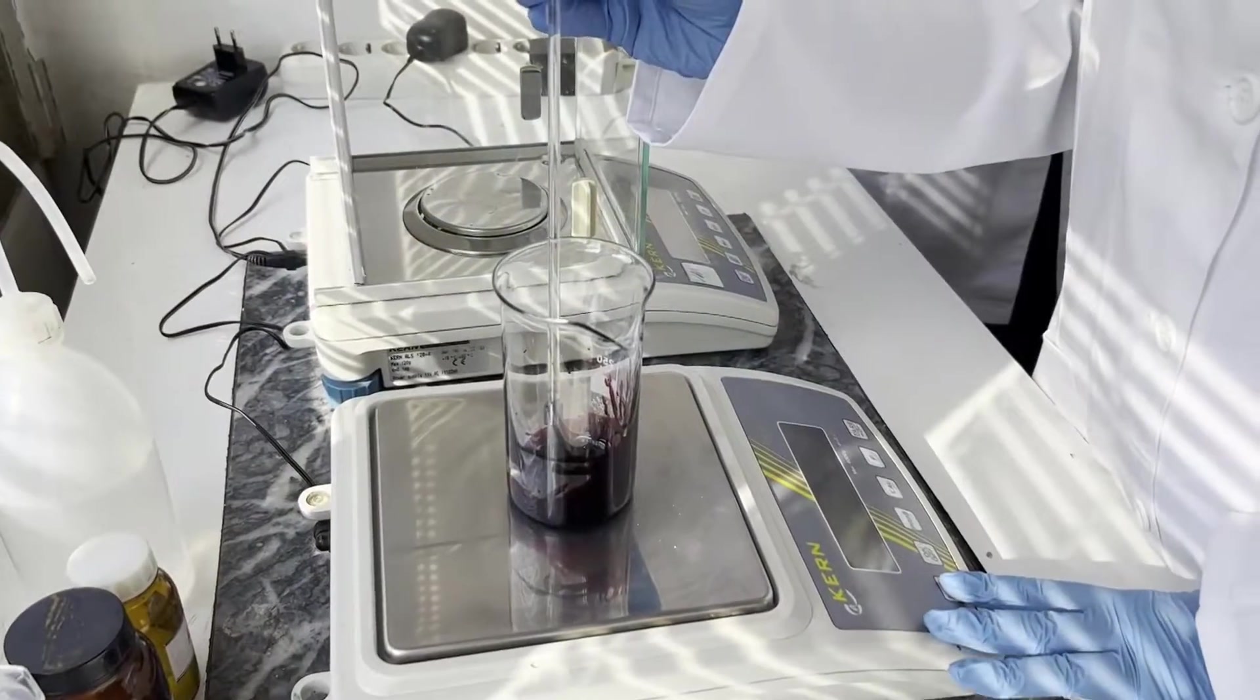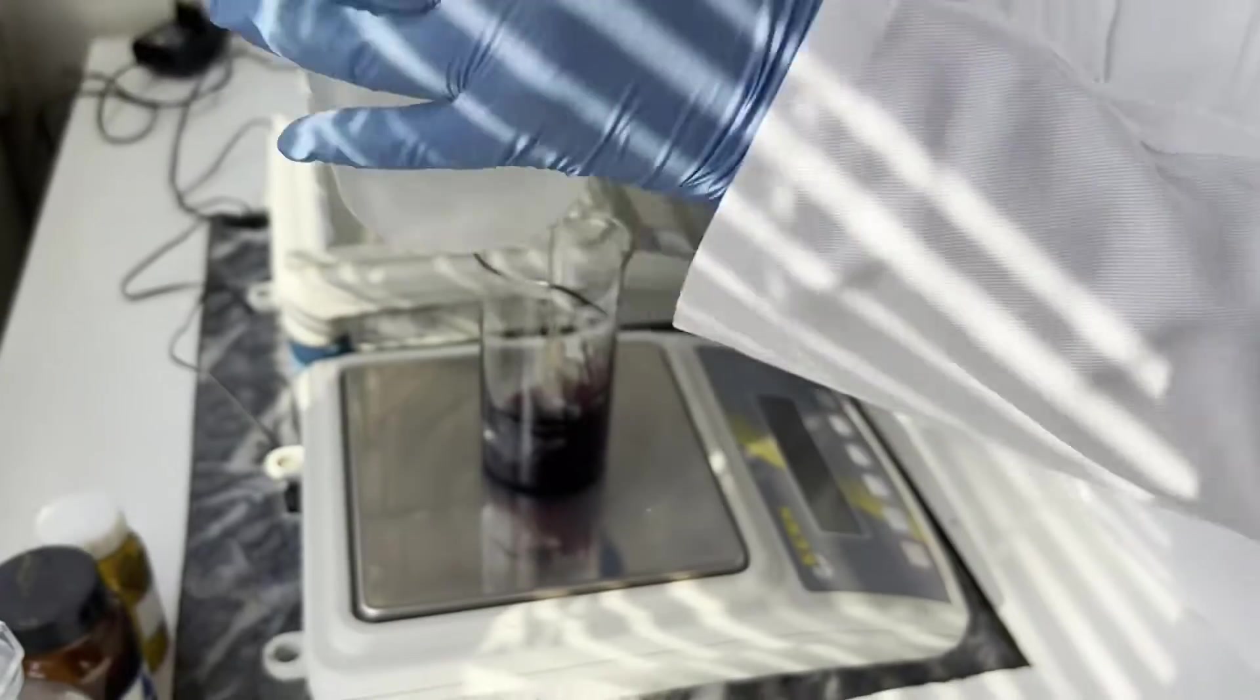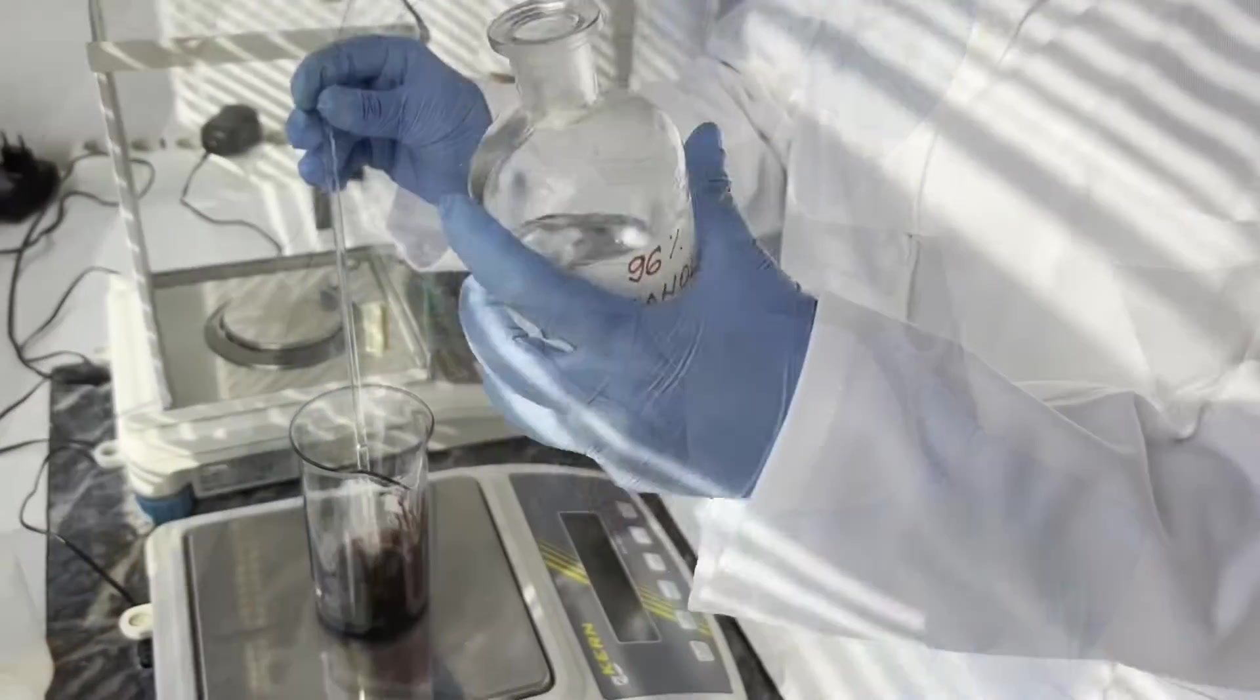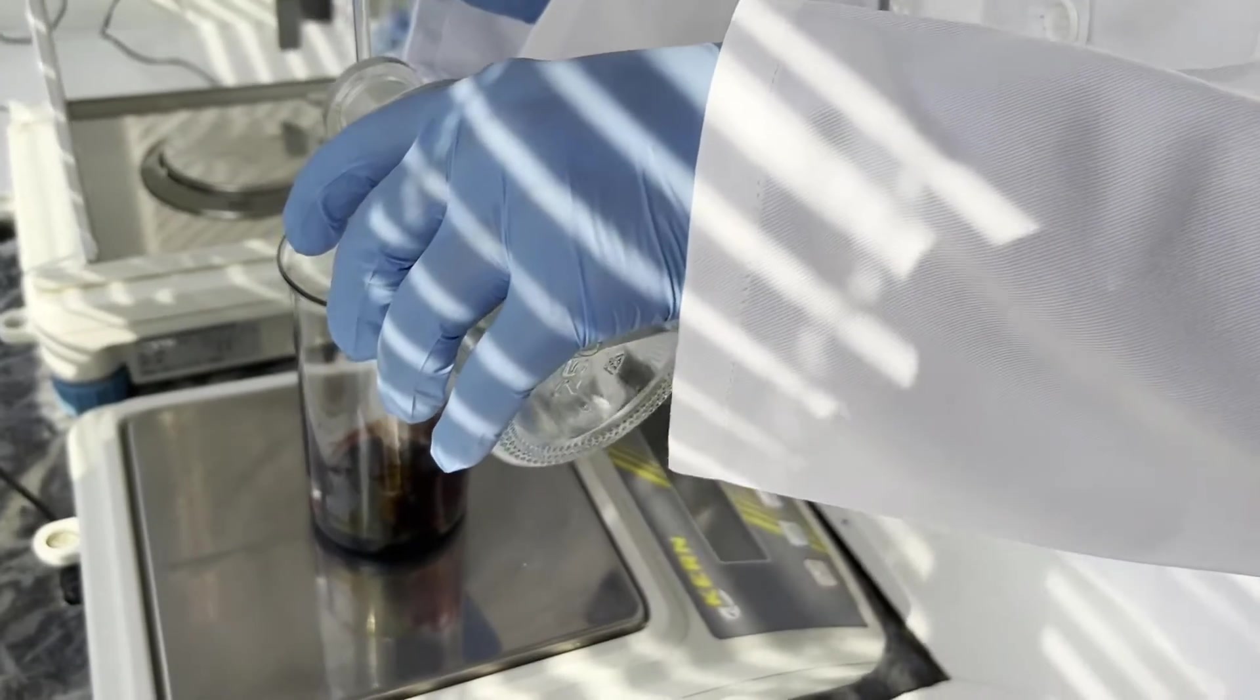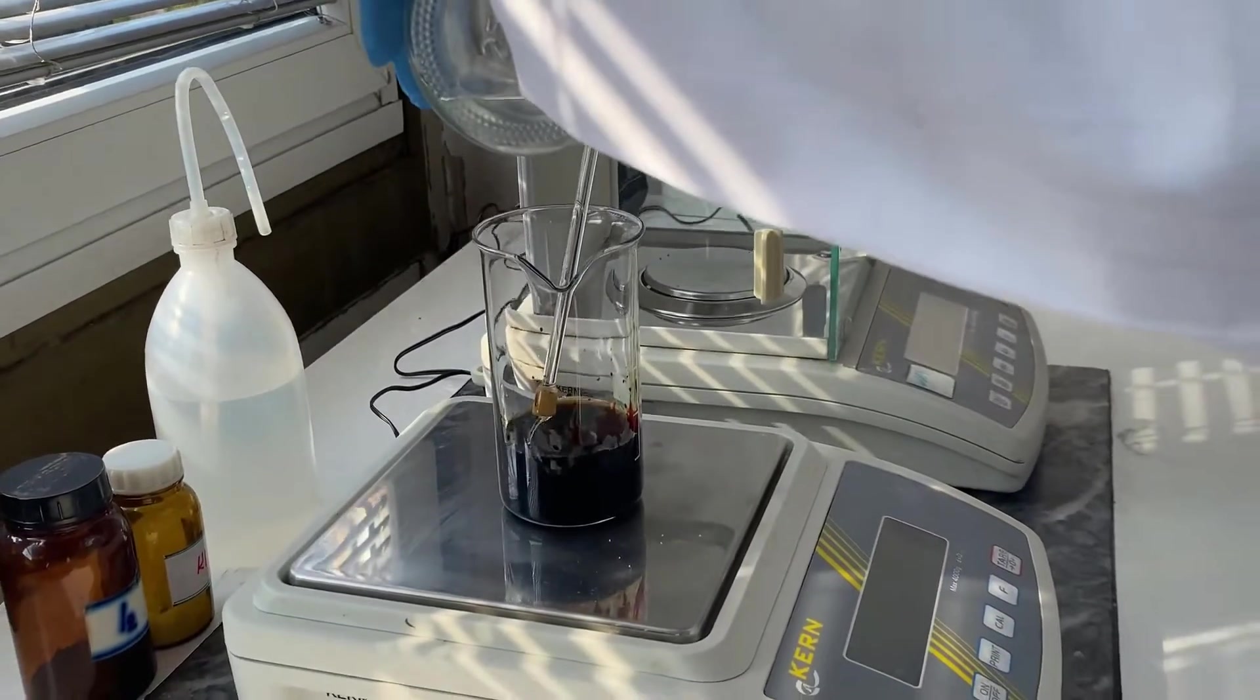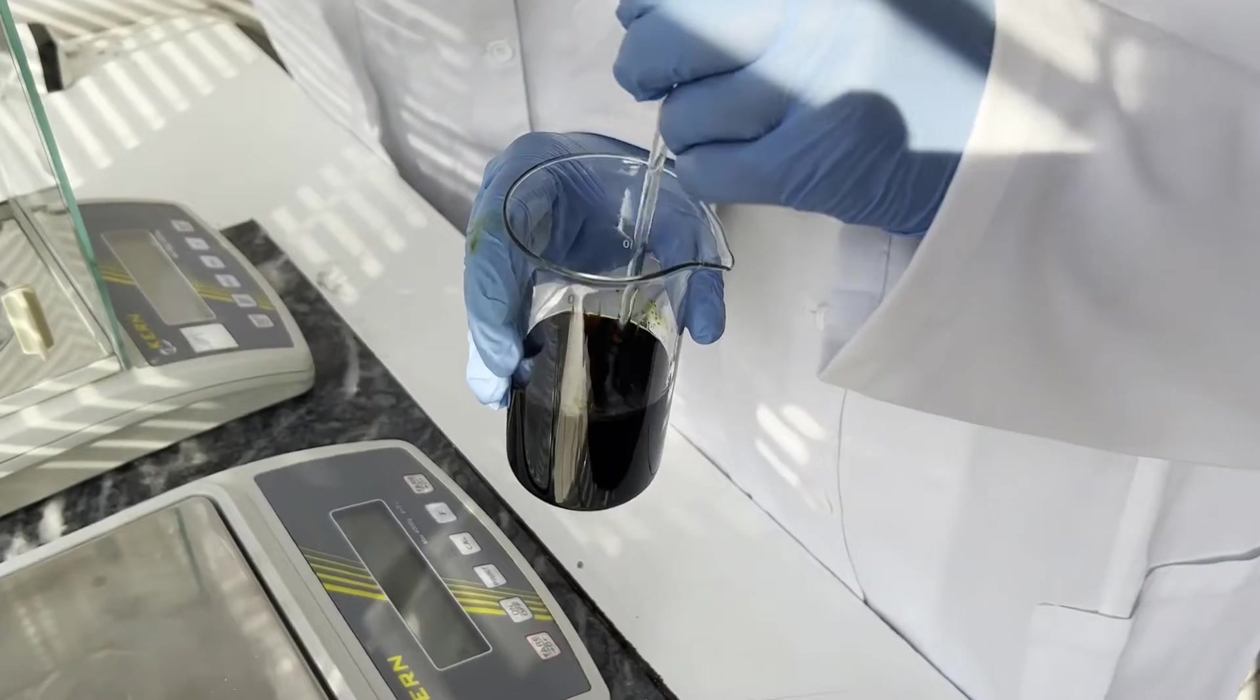Once all the iodine dissolves we will tare and pour 6 grams of distilled water into the solution. We will tare again and pour 81 grams of the 96% ethanol solution into the solution. Now we will stir so everything dissolves.